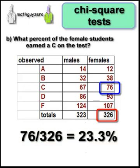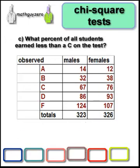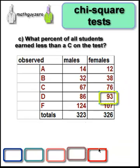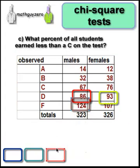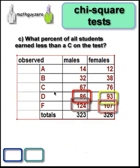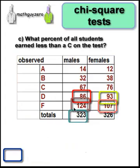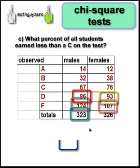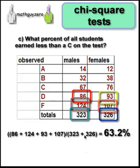Next question: what percent of all students earned less than a C on the test? Let's figure out who earned less than a C — there's that one, and that one, and that one, and that one. So those values are your numerator. The total number of students is 323 plus 326, giving roughly 63.2%.